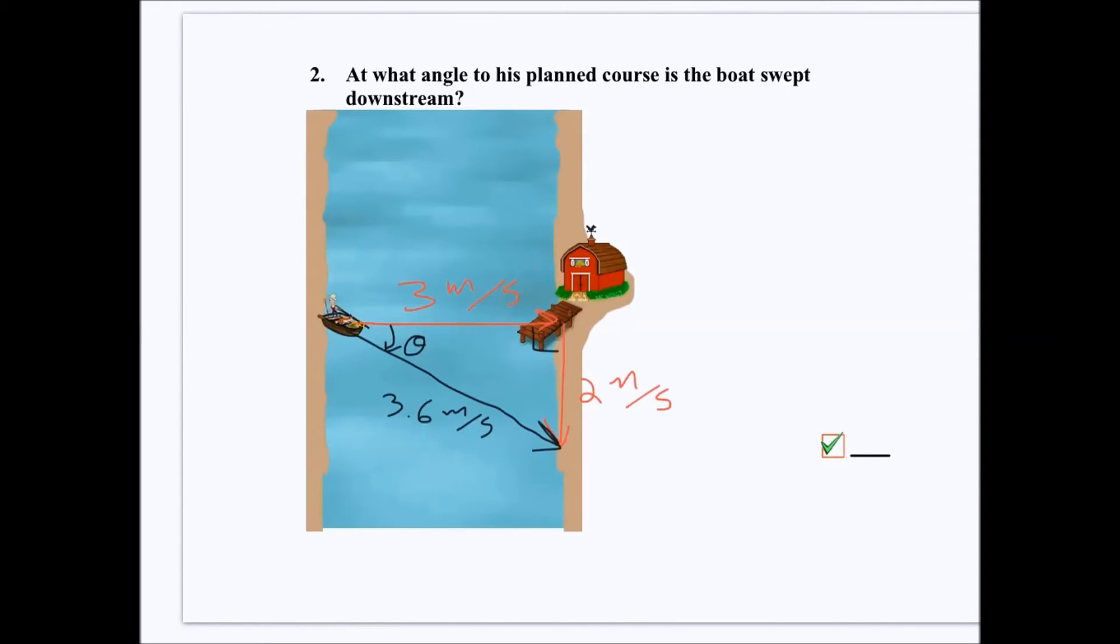So, using the same diagram from the first problem, let's go ahead and set it up and solve for theta. Now, you can use sine, cosine, or tangent here. It all would work. But because we rounded that 3.6 meters per second in our last calculation, and the 2 and the 3 were just givens, let's go ahead and use tangent here, because we know that 2 is the opposite, 3 would be the adjacent legs of our triangle, and it'll be a little bit more accurate of an answer.